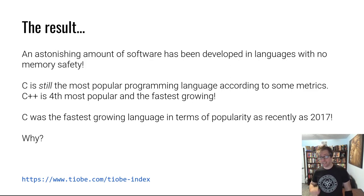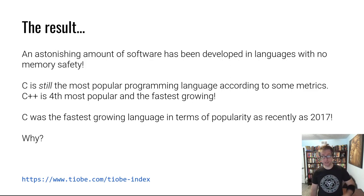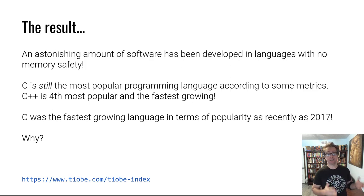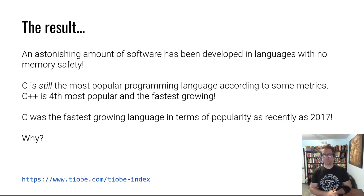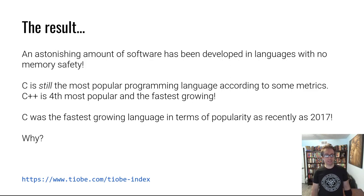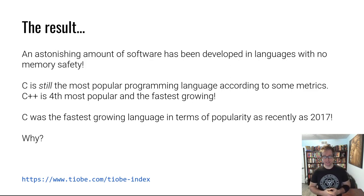The problem is an insane amount of software is written in C. Depending on your metrics, C is still the most popular programming language. If you go to the TIOBE index that's linked on the slides, C is still number one - it's 2020, nearly 50 years after the invention of C, and it is still number one after regaining its spot from Java, which was number one for over a decade. C++ is number four and is the fastest growing language, even faster than Python, and it still has memory safety issues in many use cases.